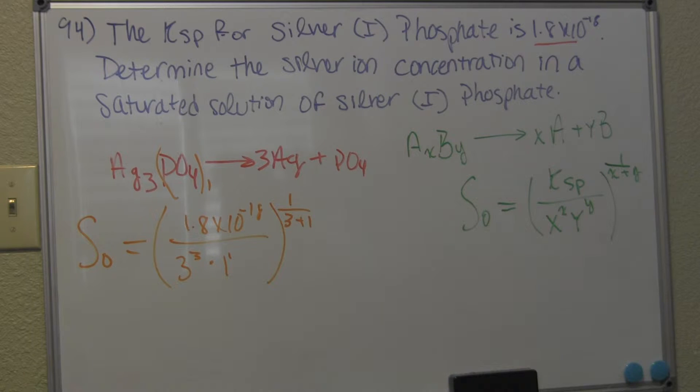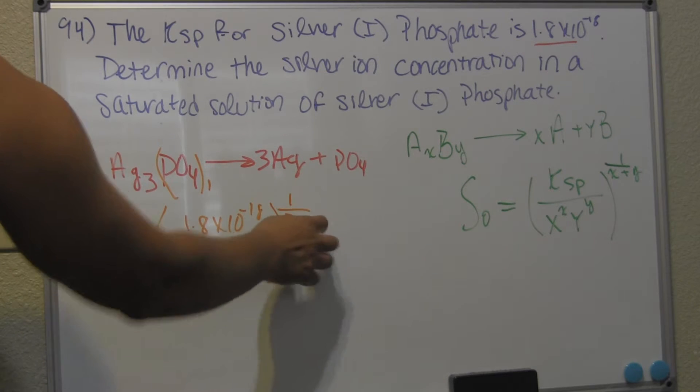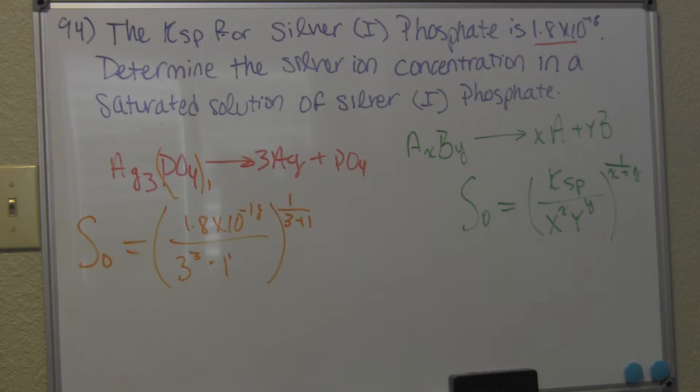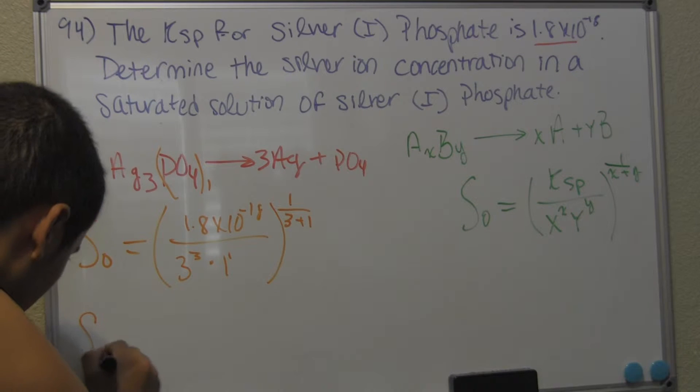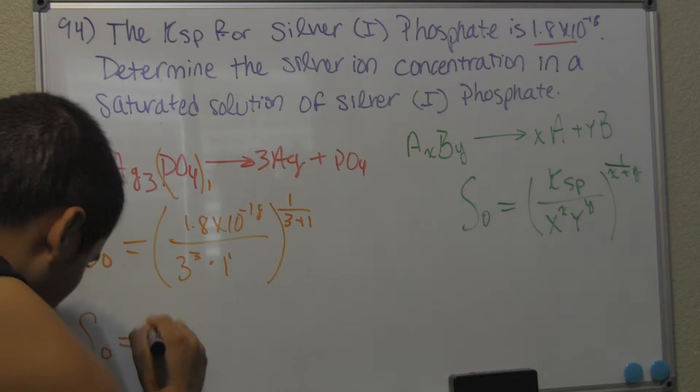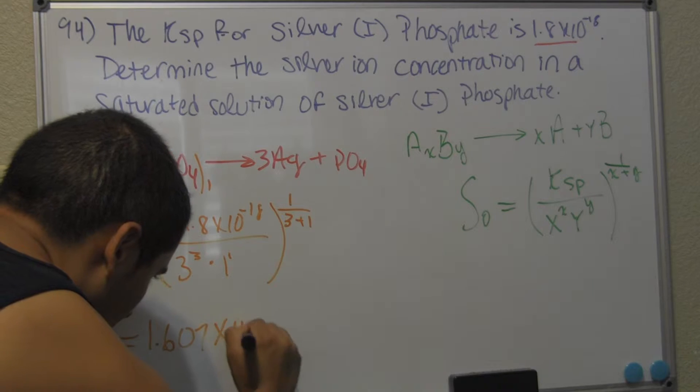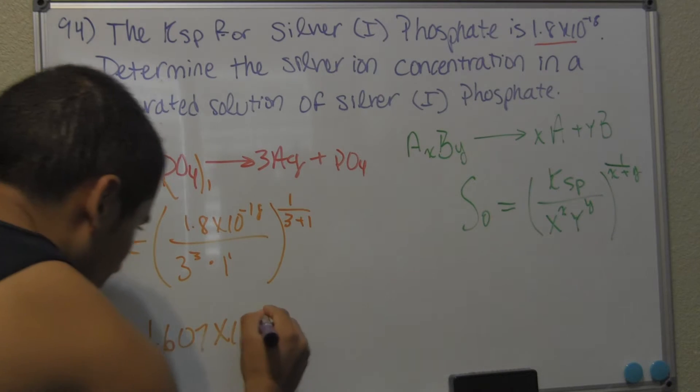So we have 1.8 times 10 to the negative 18. And you divide that by 27, which is equal to 3 to the third power. Now, you raise what you get right here to the 1 over the fourth power. So raise that to the 1 over 4. Giving us a total of 1.607 times 10 to the negative 5 power. Can you write that down? 1.607 times 10 to the negative 5.